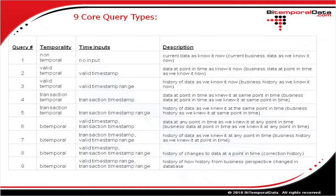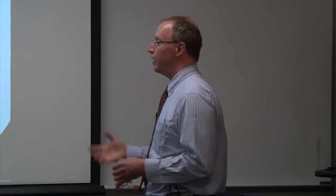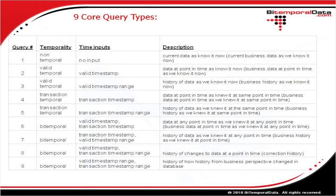The next concept is the nine core query types, each assignable to one of the four types of query temporality. These are based on the different input parameters you would use against storage of different temporalities. The first query type is a non-temporal query — you have no input parameters, because it doesn't make sense to put in valid time or transaction datetime against non-temporal storage.